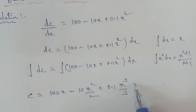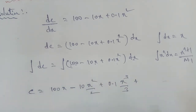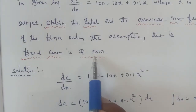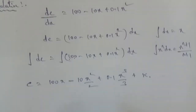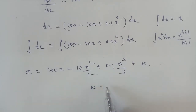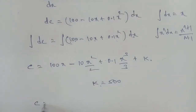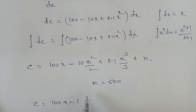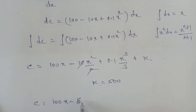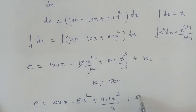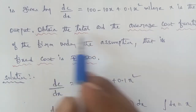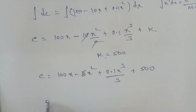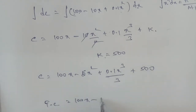Combining the results and substituting the constant of integration k = 500 (the fixed cost), we get the total cost: TC = 100x - 5x² + 0.1x³/3 + 500. Therefore, the total cost function is TC = 100x - 5x² + 0.1x³/3 + 500.